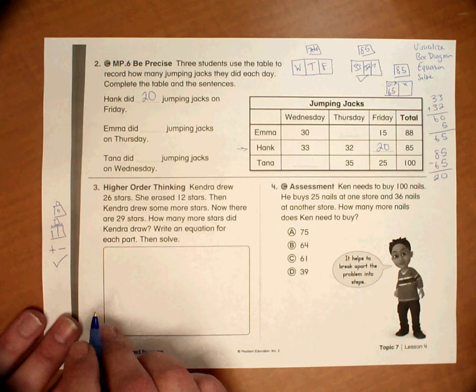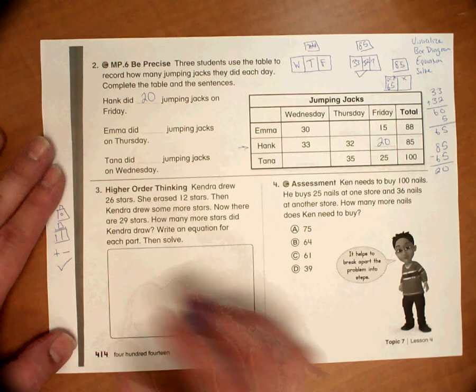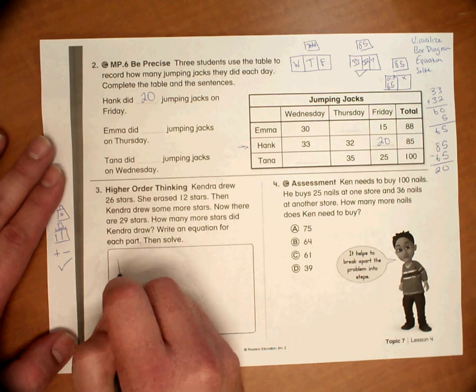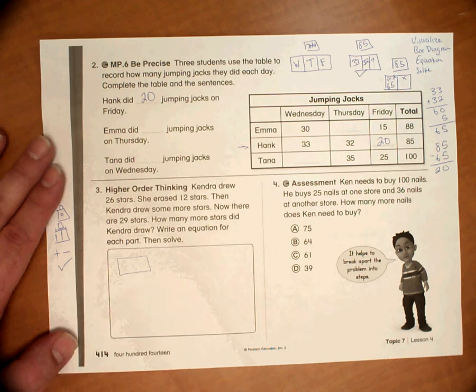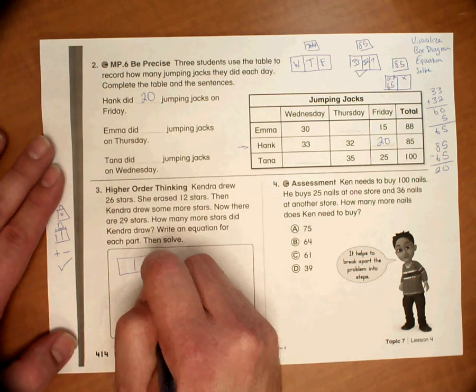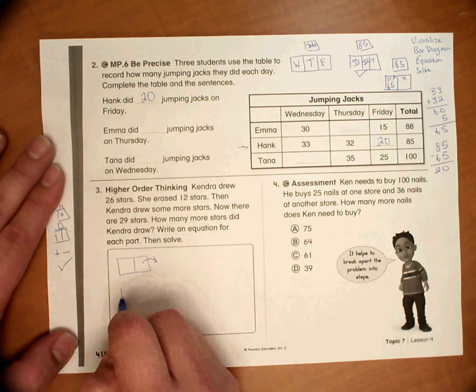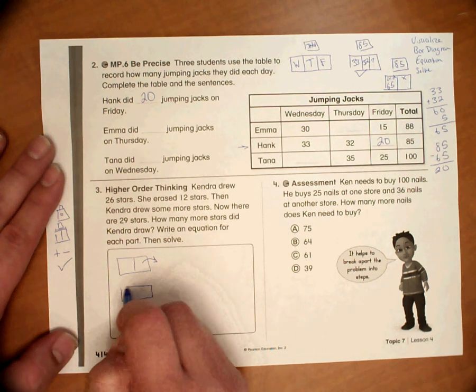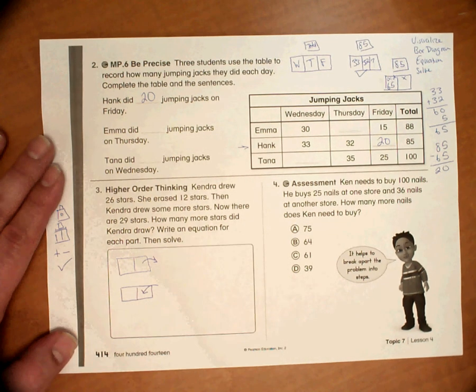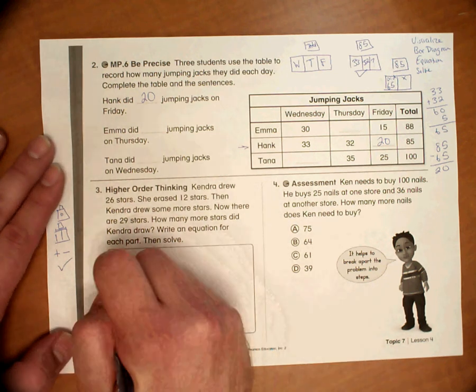So to visualize the problem, this is what I'm seeing. Kendra is drawing stars. So these are all the stars that Kendra drew. And then she's going to erase some stars. She's going to get rid of them. And then what she's going to do is she's going to draw some more stars. So those are basically my steps here. So that's step one.